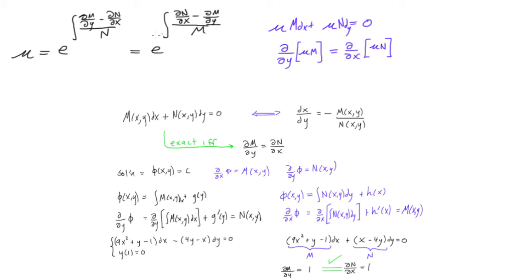...we would say d/dy of mu times m is equal to d/dx of mu times n. And you'll find that if you do this correctly, these two will actually be equal to each other. Then you can solve the rest of the equation as an exact equation, because now it will be exact.